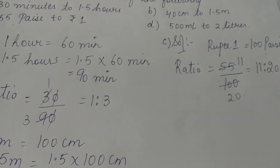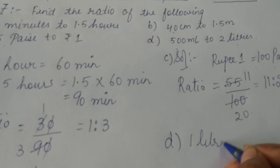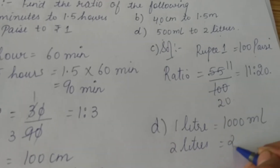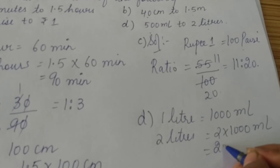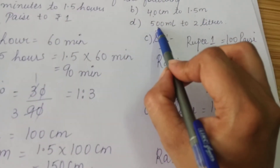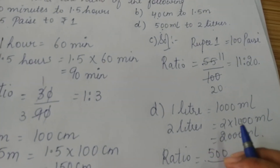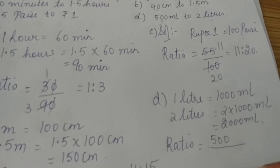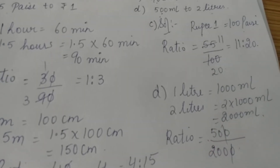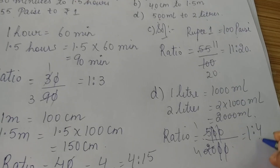Part D is 500 milliliters to 2 liters. Since 1 liter is equal to 1000 milliliters, 2 liters will be 2 multiplied by 1000, which is 2000 milliliters. We can compare only if the units are the same, so now we find the ratio of 500 milliliters to 2000 milliliters. The zeros cancel out: 5 fours are 20, so this simplifies to 1 is to 4.